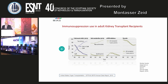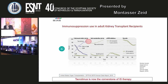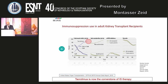The immunosuppressives used in adult kidney transplant recipients range from calcineurin inhibitors, antimetabolites, mTOR inhibitors, and steroids. As regards calcineurin inhibitors, tacrolimus is considered to be now the cornerstone of immunosuppressive therapy.